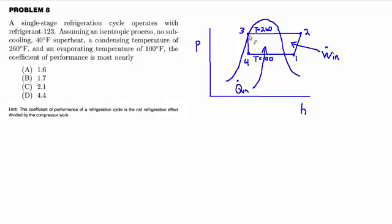It says no subcooling, so as you go through the condenser from 2 to 3, state 3 is shown as being on the saturation curve—it's a saturated liquid. It's at 40 degrees of superheat, so for state 1 coming off the evaporator, instead of showing a saturated vapor, I showed it going further out to the right to accommodate that additional superheat before compression.